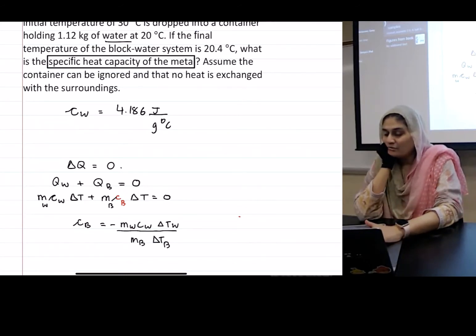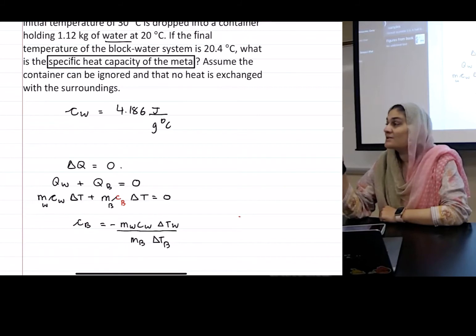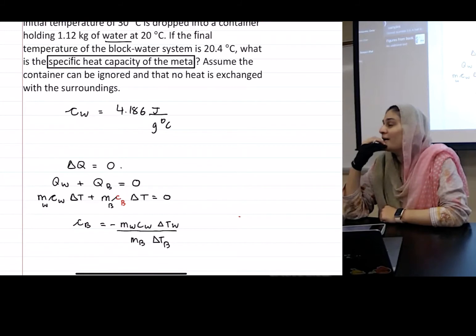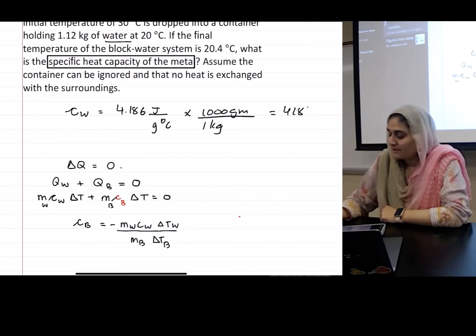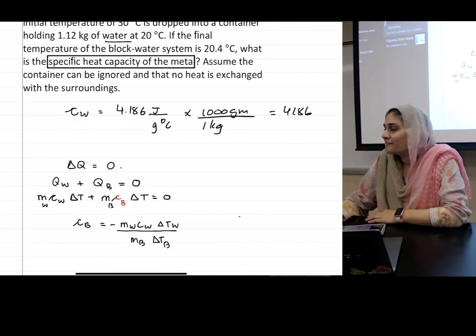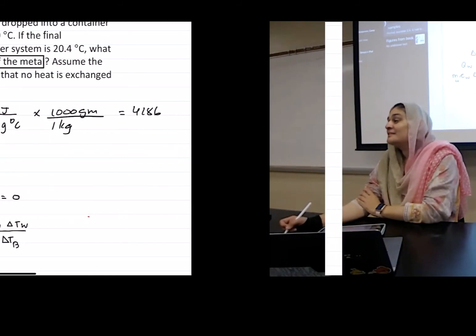Can we all plug in the values? It might be easier to just convert this one c_w than two masses. I mean, if I was being lazy I would convert one number rather than two numbers, but that's up to you. I think c_w will be 4186 if you use it in grams. In kilograms, you're multiplying it by a thousand, so grams equal one kilogram, right? Yeah, so it'll be like 4186.